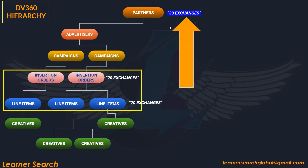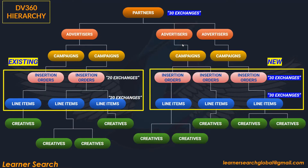Let's assume after the creation of this, after a month, I added 10 more exchanges. So when I add 10 more exchanges, I created another 2 Advertisers, under that I created Campaigns. Now while I created new IOs and Line Items, these 30 exchanges will be inherited by the new IOs and Line Items.